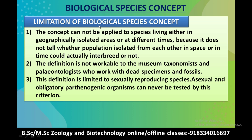The third limitation of biological species concept is that the definition is limited to sexually reproducing species. Asexual and obligatory parthenogenic organisms can never be tested by the criterion of biological species concept.